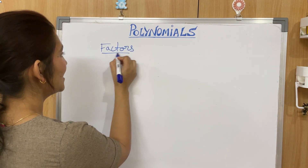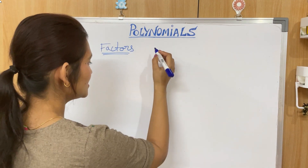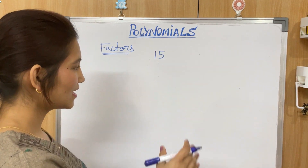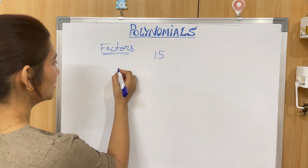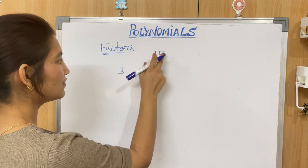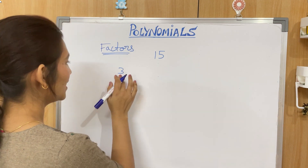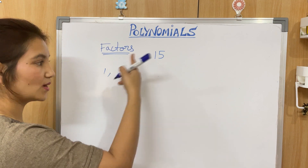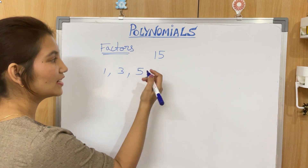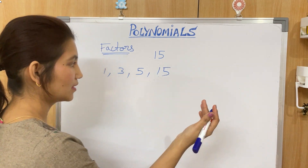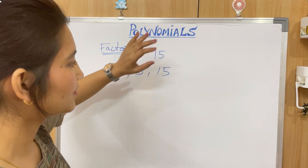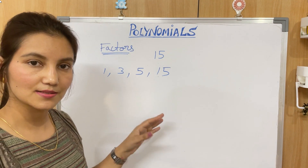Let's begin with Factor Theorem. We need to understand the word 'factor' — what factor means. Factors are numbers that divide a number completely. For example, take 15. 15 is completely divisible by 3, so 3 is a factor of 15 — meaning when you divide 15 by 3, the remainder is 0. Similarly, 1, 3, 5, and 15 are all factors of 15.